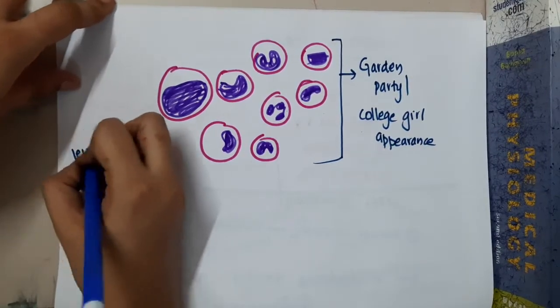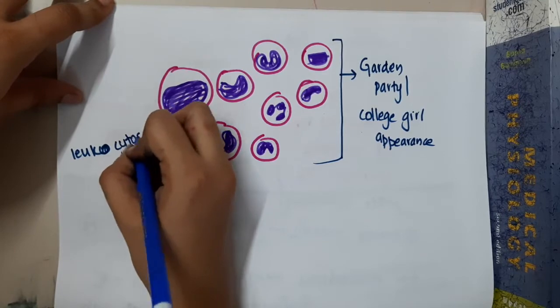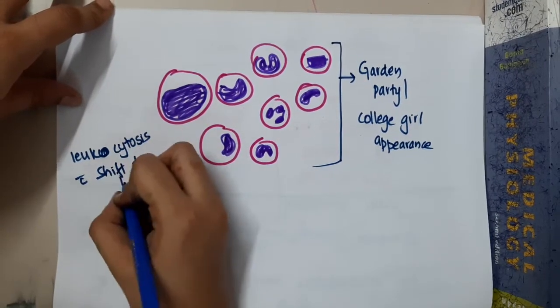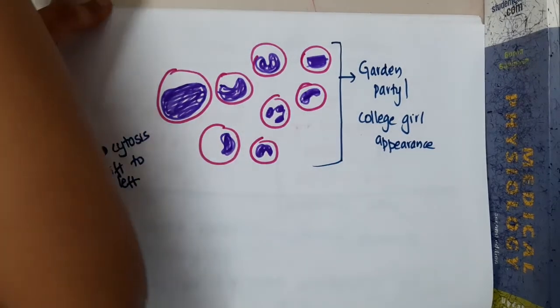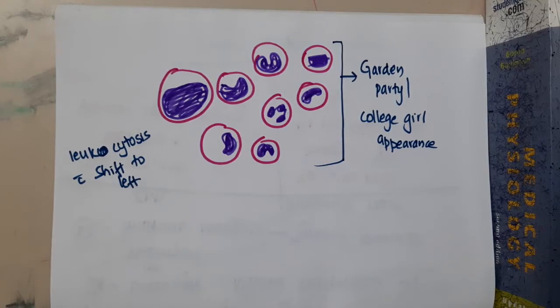This occurs because in chronic myeloid leukemia, there will be leukocytosis with shift to the left. So this is about the CML histological appearance.